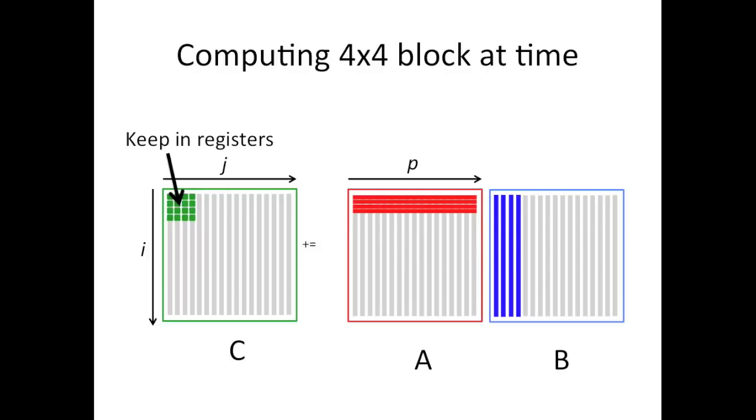So how can we do even better? Well, I believe this particular architecture has 32 registers, or the equivalent of 32 registers. So what we can do is take half of those registers and use them to keep elements of C that are being updated.